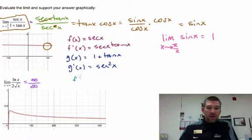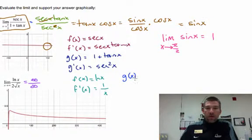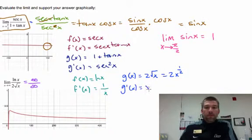We'll let f of x equal the natural log of x. So f prime of x is equal to 1 over x. g of x equals 2 square roots of x, which is, remember, this is the same thing as 2 times x to the 1 half. So the derivative of that is 1 half times 2, or just 1, x to the negative 1 half, which is the same thing as 1 over square root of x.